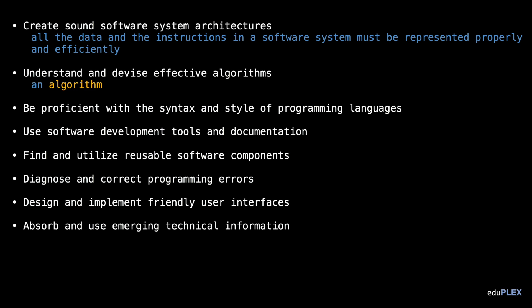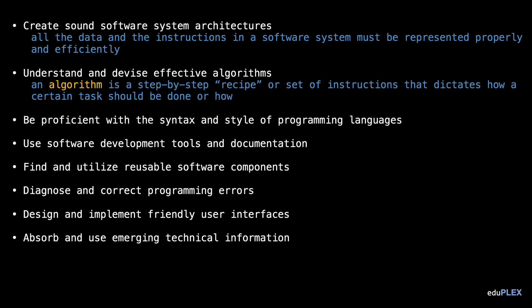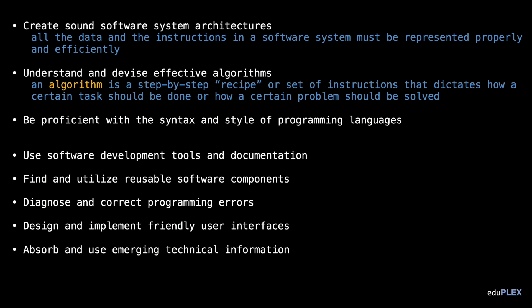In general, an algorithm is a step-by-step recipe or set of instructions that dictates how a certain task should be done or how a certain problem should be solved. How are these algorithms written? Computer programs are written in code — more specifically, in a programming language. As a result, a programmer needs to be able to understand and use programming languages throughout their career.